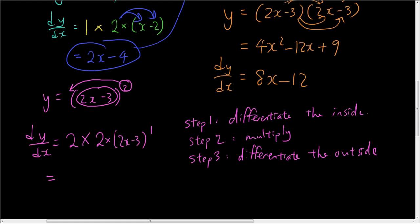So that is 2 times (2x - 3). And the power minus 1. So 2 minus 1 is just one. So that is the answer. Now if you expand that. It becomes 4 times (2x - 3). Which is 8x minus 12. Which is exactly the same as this.